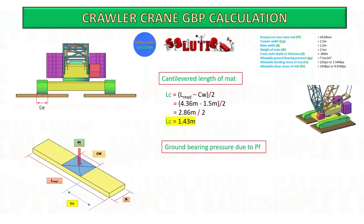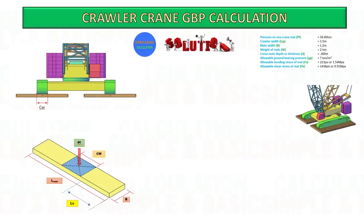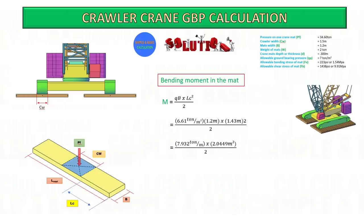Ground bearing pressure due to point load: to get this, the point load is divided by L-required multiplied by the width of mat. Next, to calculate the bending moment in the mat: ground bearing pressure multiplied by width of mat, multiplied by LC squared, all divided by 2.